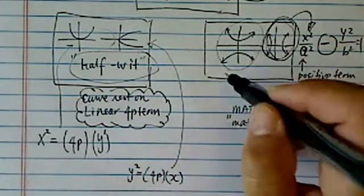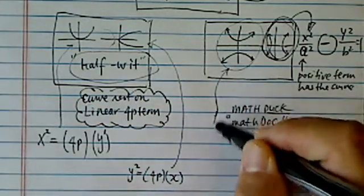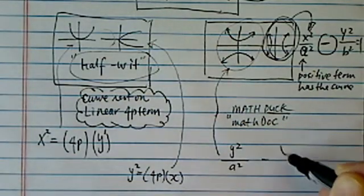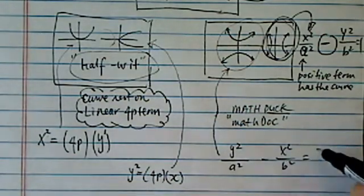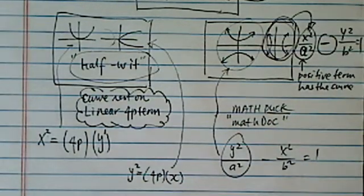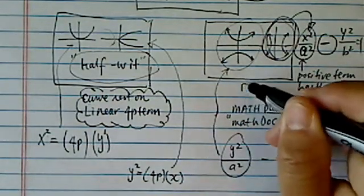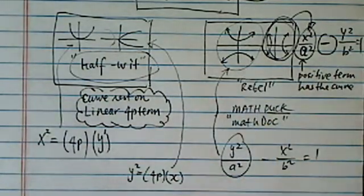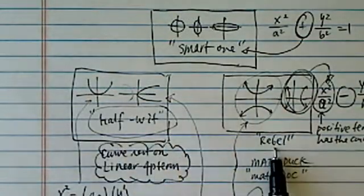And then this one has a y curve, so let's write it down here. So it's y squared over a squared minus x squared over b squared, equal to one. I think the most important thing, you've got to know which term is positive for the rebels, the rebellious. So there you have it. In the family, you have the smart one, the half-wit, and the rebel.